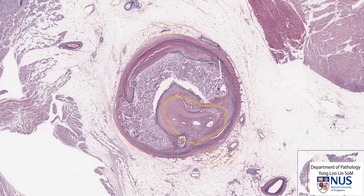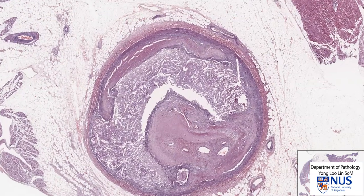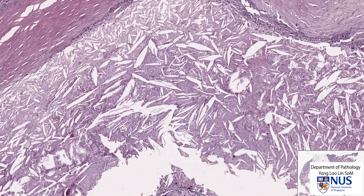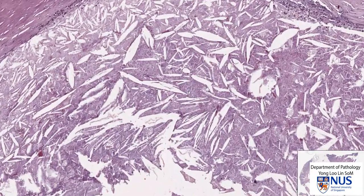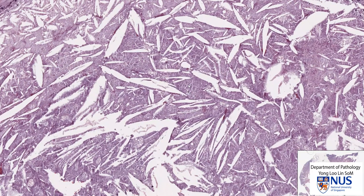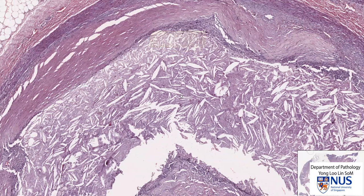Let's look at the components one by one. I'm first going to demonstrate the microscopic features of the atheroma. Here is the lipid core of the atheroma, and on high magnification we don't see a lot of cellular material, but we see this pink amorphous material and a lot of these empty cleft-like spaces. These are known as cholesterol clefts, because the lipid washes out during the processing stages of the microscopic slide, and hence they end up looking like empty spaces.